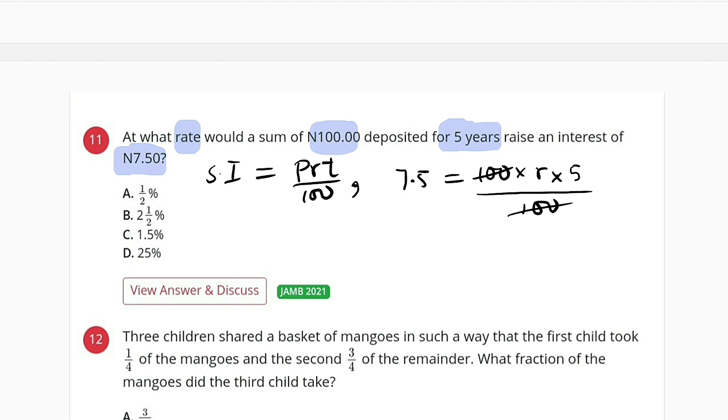This 100 will take care of this 100. To the top we have only R times 5, which is 5R. So 5R equals 7.5, and R equals 7.5 divided by 5.